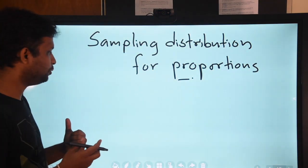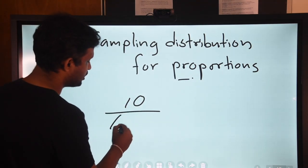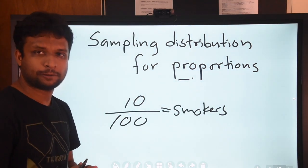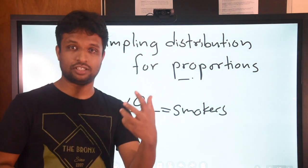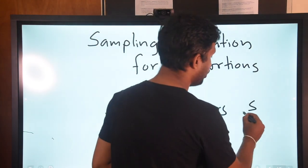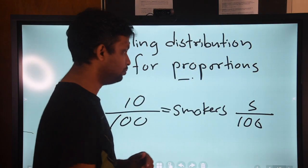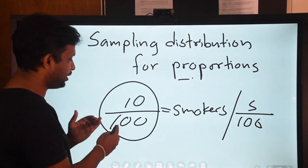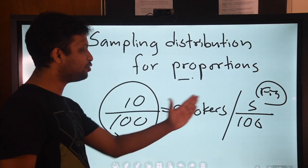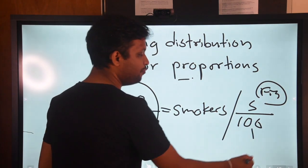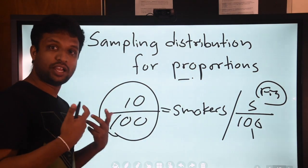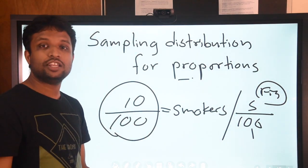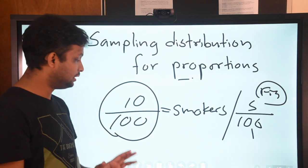Now assume that 10 out of 100 people are smokers in a specific population. The accepted population proportion is 5 out of 100 — this is normal. But behaviors and other things are not good in this specific population, so we are going to compare this sample value against this fixed population value, and determine whether there is a significant difference between these two proportions.